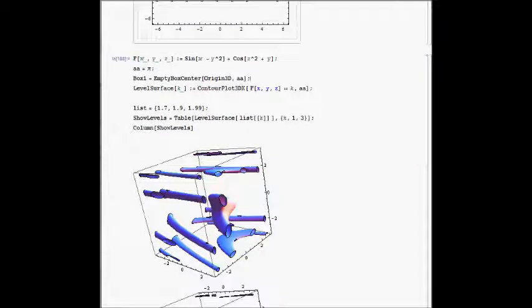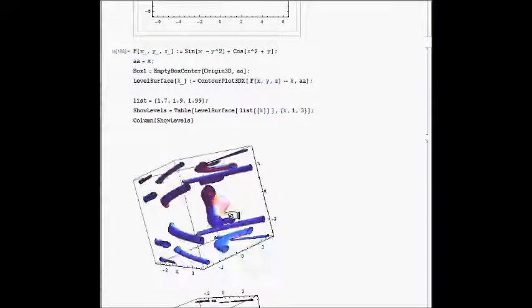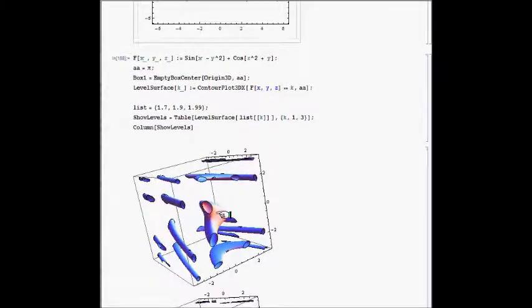Turns out Mathematica is not handling this nicely, it's very slow. So I got this snapshot instead of that manipulate command. So this is level 1.7. I'm going to look around.